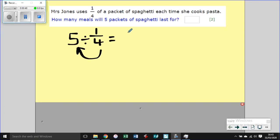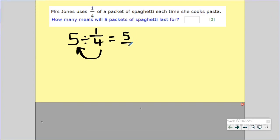So we have five over one times by four over one is simply twenty. Mrs. Jones will get twenty meals.